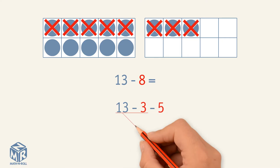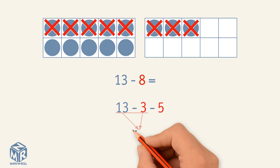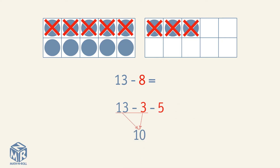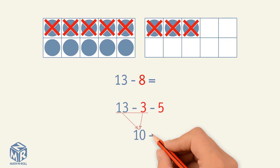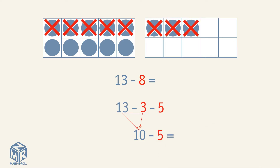13 minus 3 equals 10. 10 minus 5 equals 5. So 13 minus 8 equals 5.